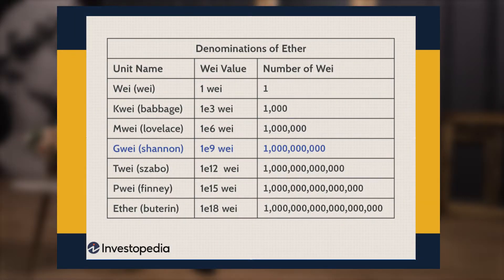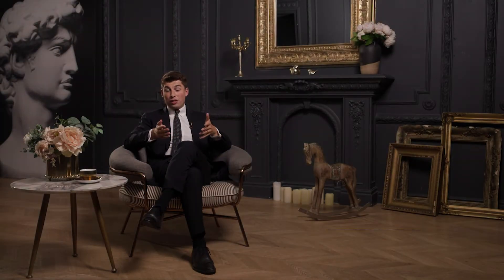The Giga Wei, or Gwei for short, equal to one billion Wei, is one of the most popular Wei denominations and is used to represent gas taxes. As a result, if you look at a gas tracker and find that the average gas for a transaction is 100 Gwei, you should expect to pay a base fee of 0.00000001 Ether for that specific transaction.